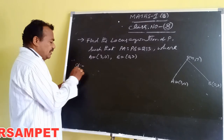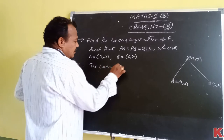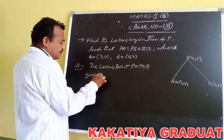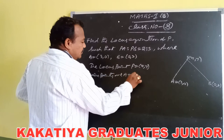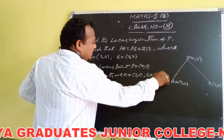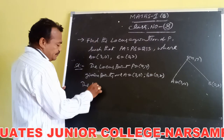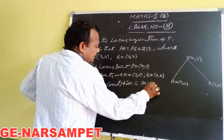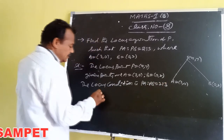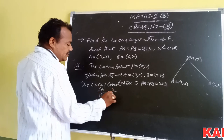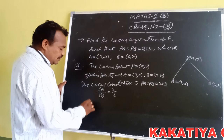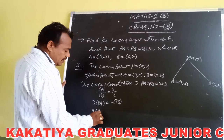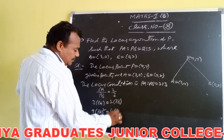Taking the locus point coordinates P equal to X comma Y. Given points are A equal to (3, 0) and B equal to (0, 2). The locus condition is PA is to PB equal to 2 is to 3, which means PA by PB equal to 2 by 3. By cross multiplication, 3 of PA equals 2 of PB. Squaring on both sides gives 9 of PA squared equals 4 of PB squared.